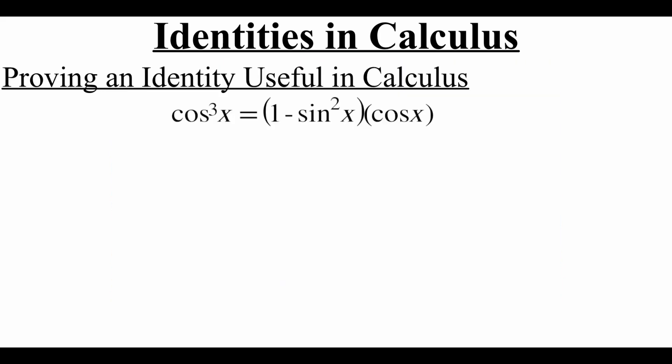In most calculus problems where you have to use identities, the object would be to take a complicated expression and make it simpler for the sake of computational ease, but there are occasions where it's actually necessary to take a simple expression and make it more complicated just to make the calculus easier. So we've got an example here where we've got cosine cubed of x equals 1 minus sine squared of x times cosine of x. The left hand side is much simpler than the right hand side, but the right hand side can actually be easier to work with depending on what we're doing.